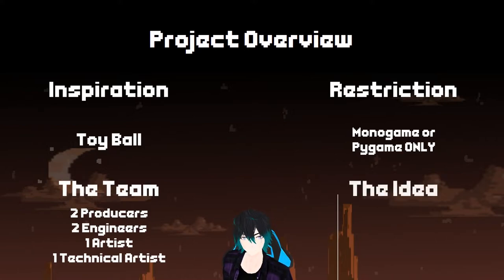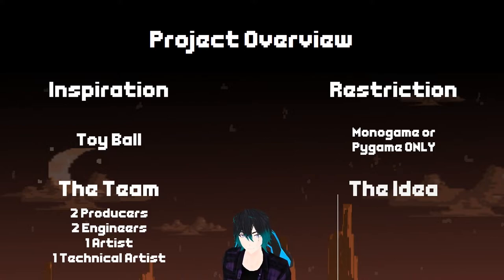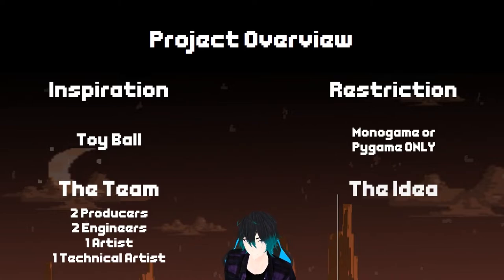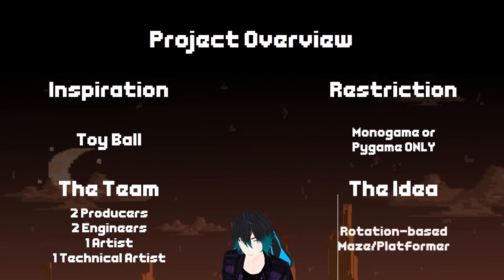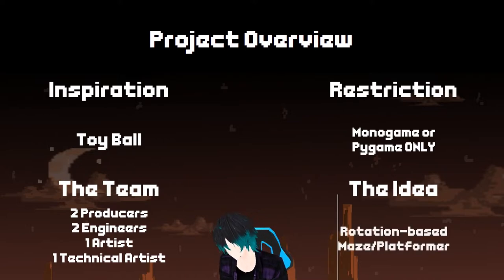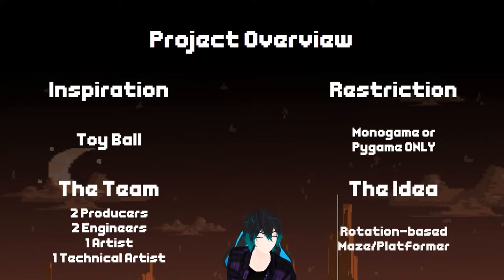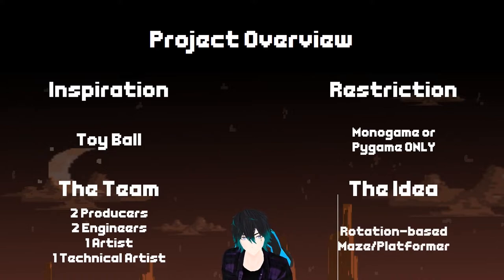Our ideas — we bounced around a couple, including a juggling game and some ideas about what else you can do with a ball that's not standard. What we came up with in the end, against my better judgment, was a rotation-based maze-slash-platformer game. The idea was that you'd play as a ball who could rotate the world around them to gain momentum in either direction, bounce off little ramps, and platform your way up out of a maze, kind of like you were escaping from a black hole.